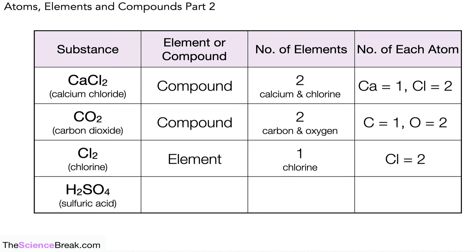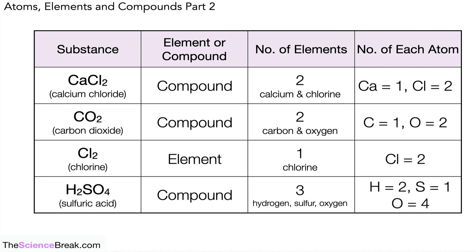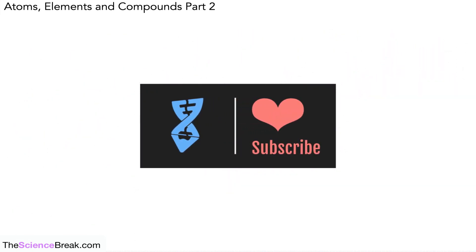The last one, sulfuric acid H₂SO₄, is slightly trickier. We can tell straight away it's a compound because there is more than one element present. There are three elements: hydrogen, sulfur, and oxygen. In terms of the number of atoms, there are two hydrogen atoms, one sulfur atom, and four oxygen atoms. So from a formula, we can work out the number of elements and the number of atoms of each element present in that compound.